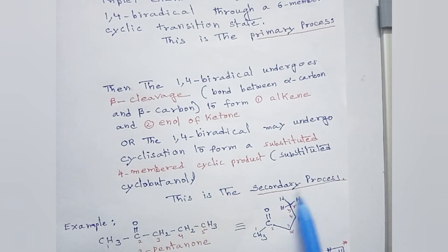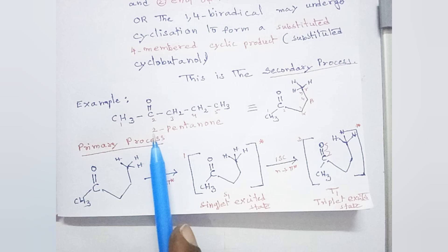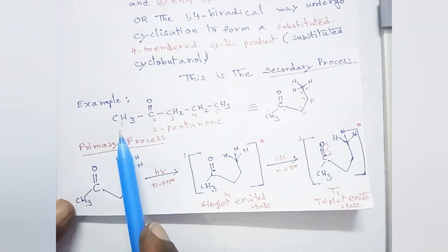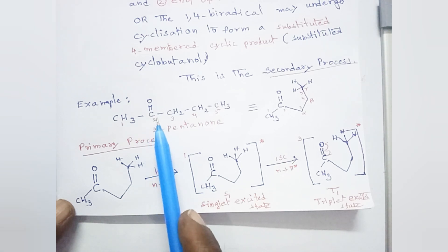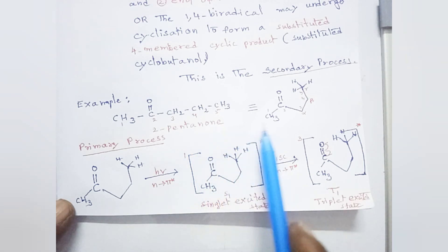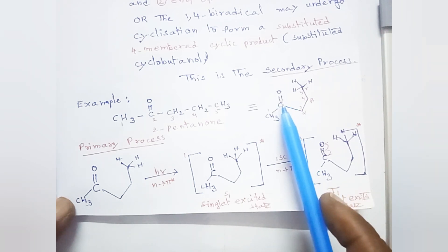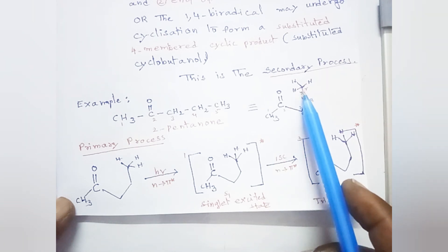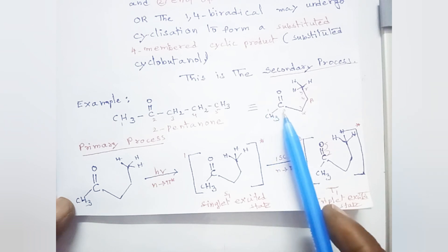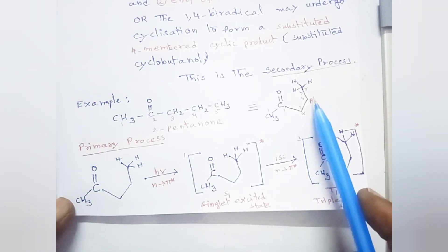Now let us consider the example of 2-pentanone, which has 5 carbon atoms with the carbonyl group at the second position. For convenience, we can draw the structure as: C double bond O, CH3, CH2, CH2, CH3, numbered 1 through 5. This identifies the alpha carbon, the beta carbon, and the gamma carbon.